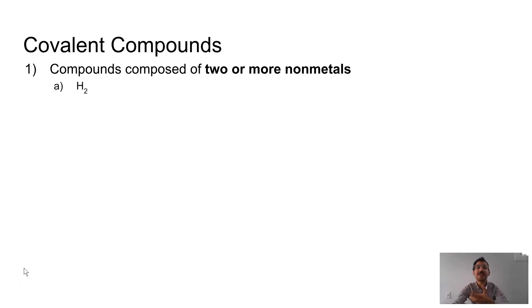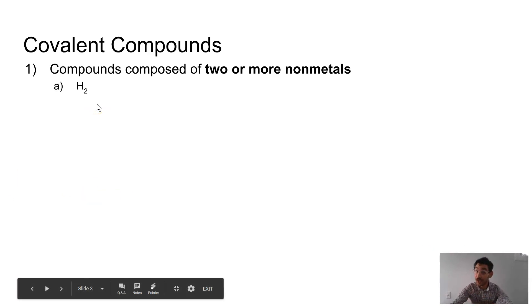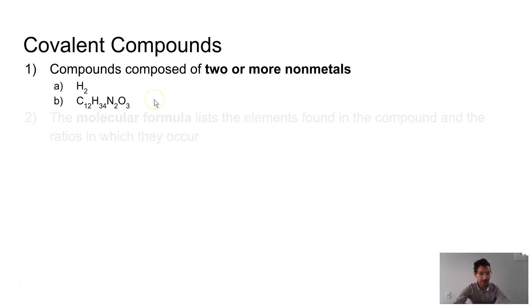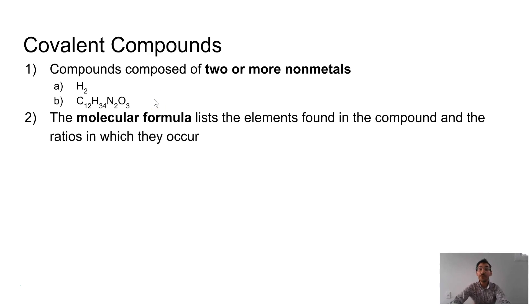I just said, but I guess it's two or more nonmetal atoms, I should say. And so here's a real simple guy, and this dude's pretty complicated. So both of those are molecular formulas, and those list the elements that are found in the compound and the ratio in which they occur.